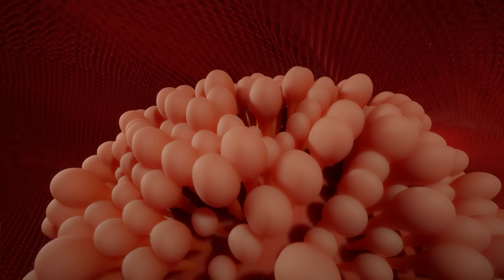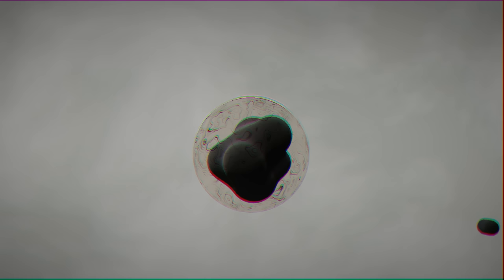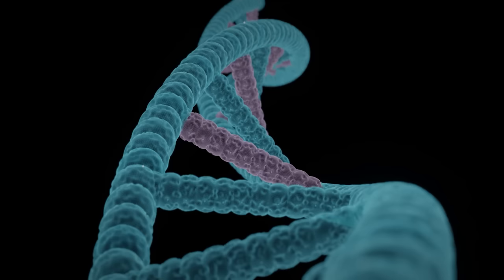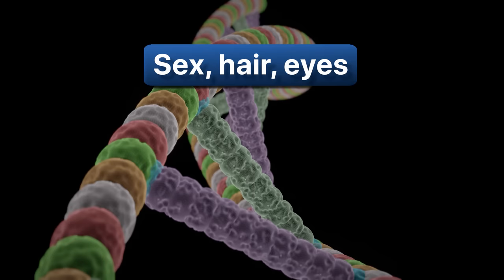As the male and female pronuclei form, tissues called microtubules pull these, thus uniting the two groups of chromosomes and completing the fertilization process. In this instant, a unique genetic code is created, determining its sex, hair color, eye color, and hundreds of other characteristics.